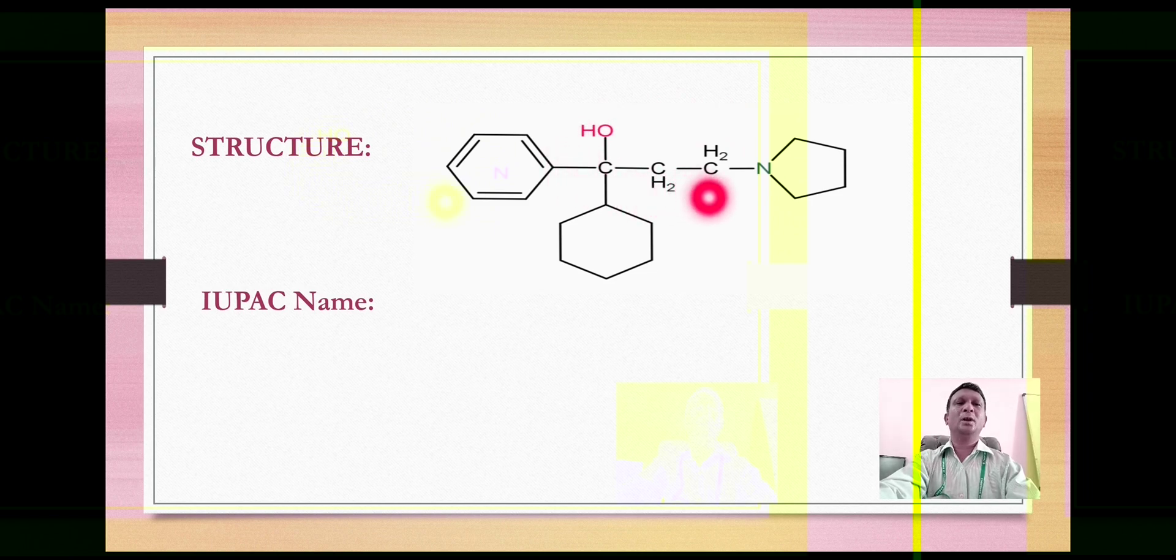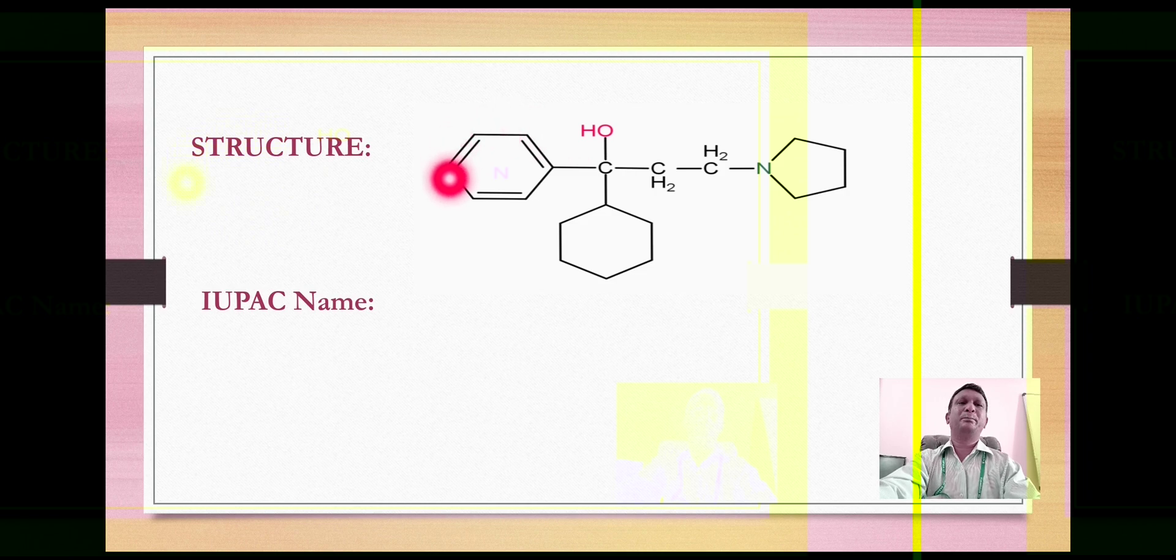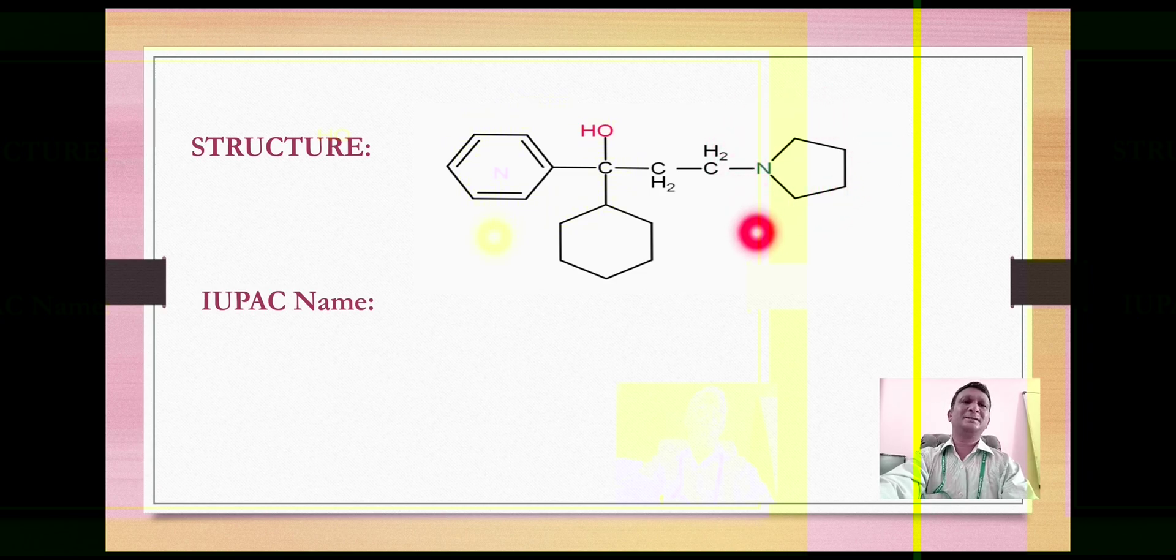Though it is a three carbon chain, it is a derivative of propanol. On this first carbon we have the presence of this six-membered cyclohexyl ring and this six-membered phenyl ring. On position number three we have presence of this five-membered saturated heterocycle pyrrolidine ring which is attached with its position number one on this third carbon.